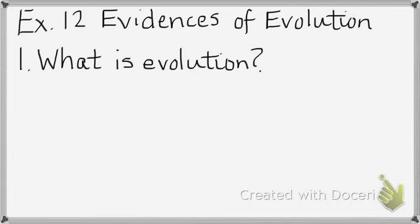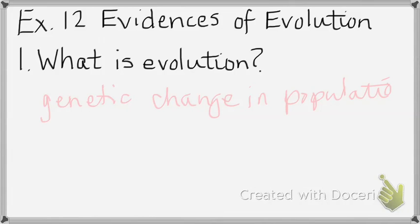Now let's talk about evolution. Our definition of evolution is the genetic change in populations. We're looking for genetic changes in populations — individuals do not evolve, but populations do. Generally it takes time to see this change, but evolution can also occur very quickly — you can get a genetic change in a population really fast.